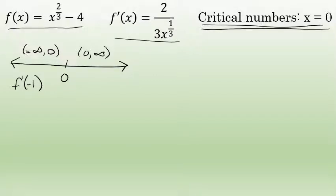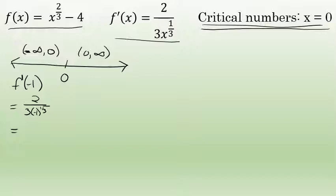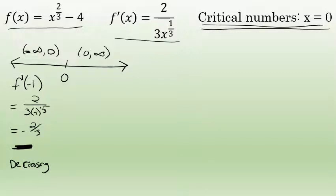I've picked negative one as a test value between negative infinity and zero — I could have picked negative two or negative 100, they'll all give the same sign. Substituting negative one into the derivative, I'm really just concerned about whether the result is positive or negative. Negative one to the one-third power — the cube root of negative one — is negative one, so f'(-1) = 2/(3·(-1)) = -2/3. It's a negative result, so this function is decreasing over the entire interval from negative infinity to zero.